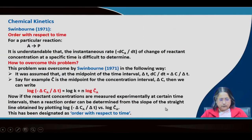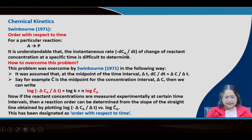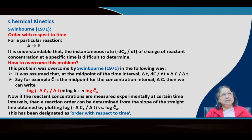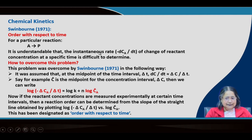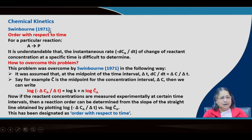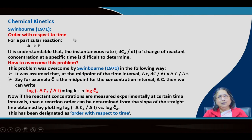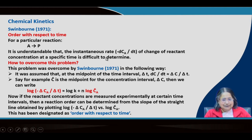The instantaneous rate, −dCA/dt, is the slope at a particular point where the time difference is very small. It is difficult to determine the instantaneous rate experimentally. Swinburne in 1971 developed two different methods: one is order with respect to time and the other is order with respect to concentration, by which the order can be determined more easily.